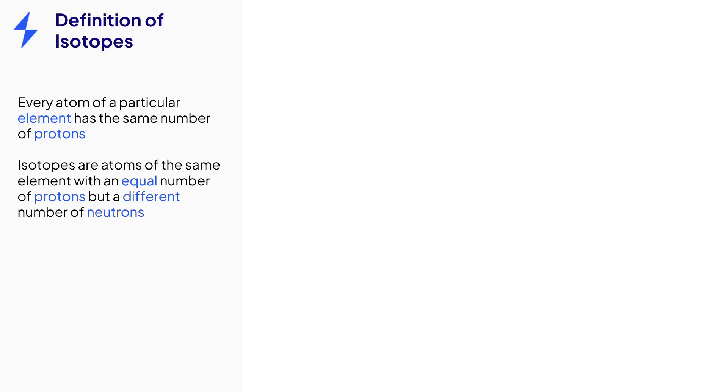Isotopes are versions of the same element with different numbers of neutrons. These atoms are both lithium atoms but they have different numbers of neutrons. These are isotopes.